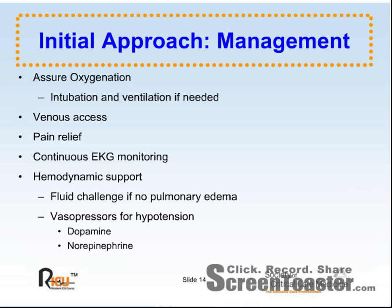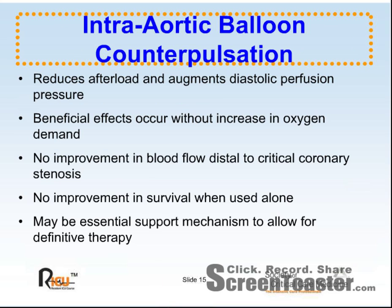Dopamine or norepinephrine are used to maintain arterial pressure adequate for tissue perfusion. Intra-aortic balloon counterpulsation is very useful to support patients with cardiogenic shock. Beneficial hemodynamic effects include improving cardiac output by decreasing afterload and improving coronary blood flow without increasing myocardial oxygen demand. Current ACC/AHA guidelines list balloon counterpulsation as a class 1 recommendation for patients with cardiogenic shock not responding quickly to other measures, and it may result in short-term functional improvement of the ischemic myocardium.